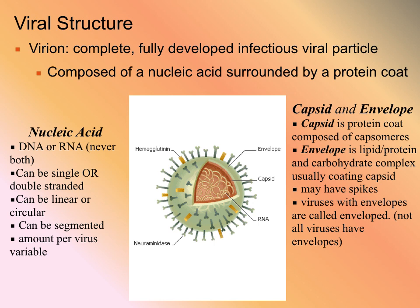You'll hear the term 'mature virion.' It is composed of some kind of genetic material surrounded by a coat made out of proteins. DNA or RNA, never both. This genetic material can be single-stranded or double-stranded, sometimes in a circular form, sometimes linear, sometimes in multiple pieces. How much genetic material is within a specific virus is virus-specific.